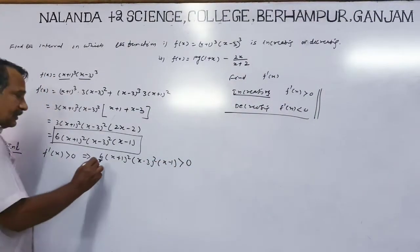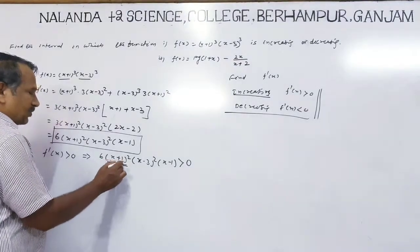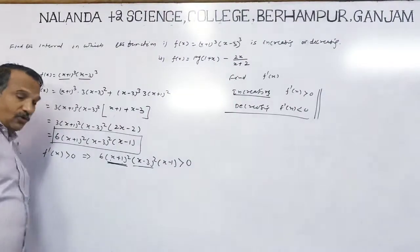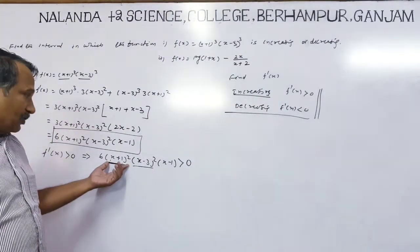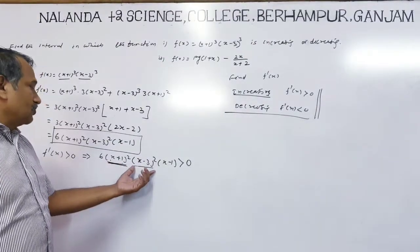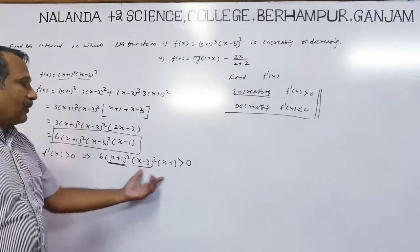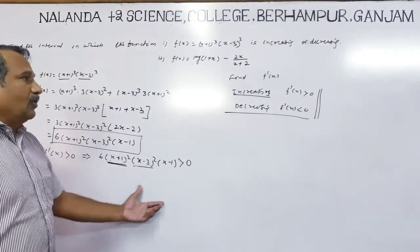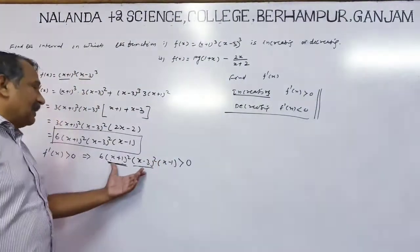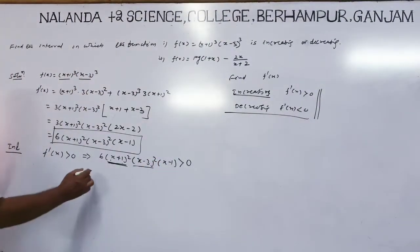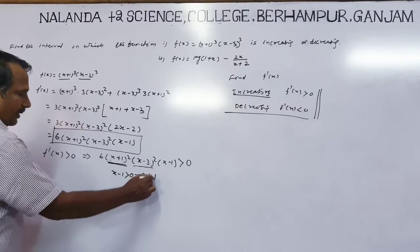For any value of x, (x+1)² and (x-3)² are always positive because they are squares. If x equals -1, the term is 0, and if x equals 3, it is also 0. So except at x = -1 and x = 3, these quantities are positive. Therefore, we need x - 1 greater than 0, which gives x greater than 1.